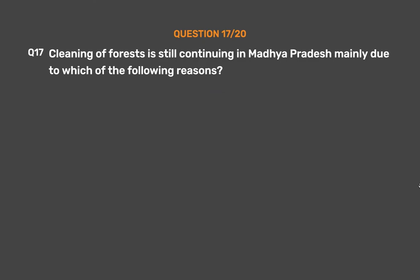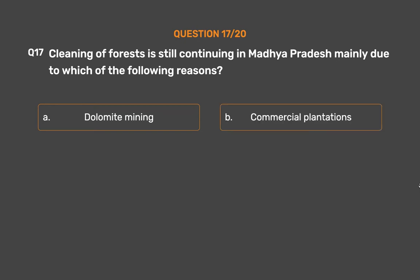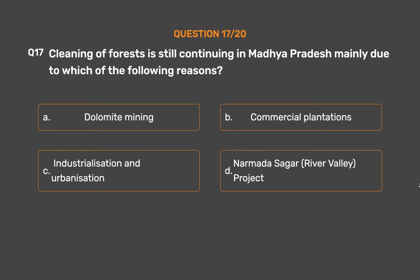Question number 17. Clearing of forests is still continuing in Madhya Pradesh mainly due to which of the following reasons? Option A: Diamond mining. Option B: Commercial plantations. Option C: Industrialization and urbanization. Option D: Narmada Sagar River Valley Project.